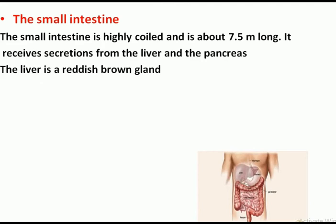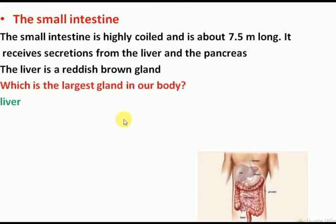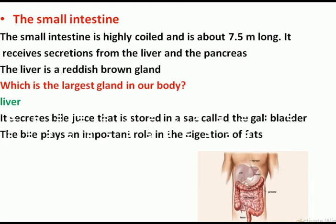The largest gland in our body is the liver. It secretes bile juice, which is stored in the gallbladder. Bile plays an important role in the digestion of fats.